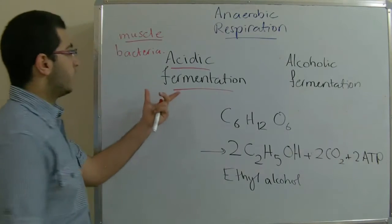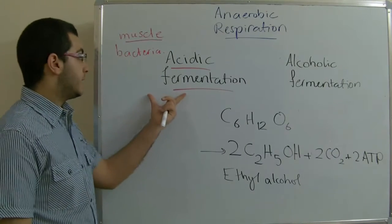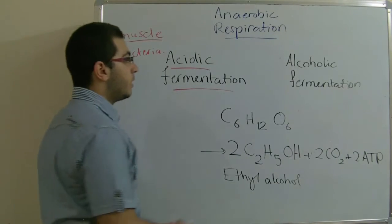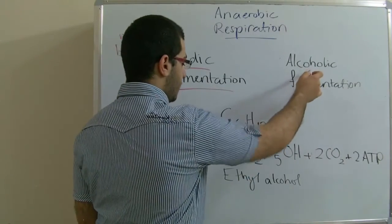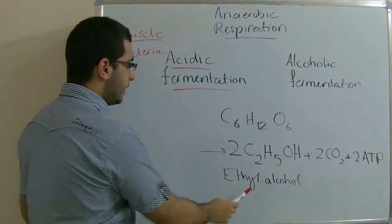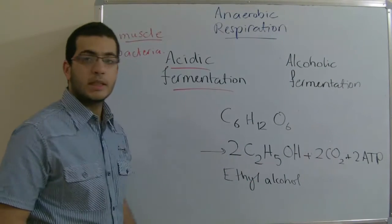So the first one is called acidic fermentation because lactic acid is produced, while the second is called alcoholic fermentation because ethyl alcohol is produced. And this takes place in yeast fungus.